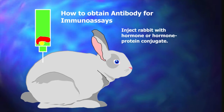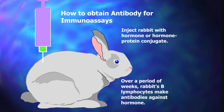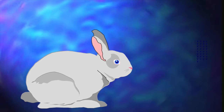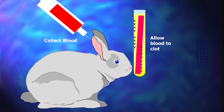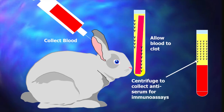In order to obtain antibodies for an immunoassay, the animal used for testing needs to be injected with the hormone or hormone-protein conjugate. Over a period of time, the animal's lymphocytes will create antibodies against the hormone. After that time, collect the blood, allow it to clot, and then centrifuge it to collect the antiserum.